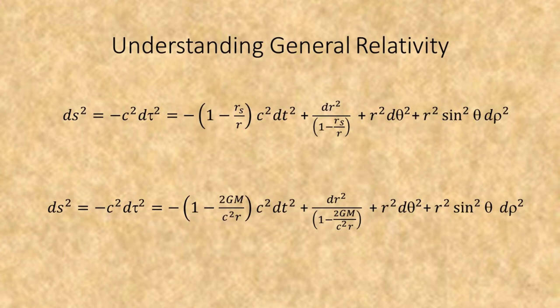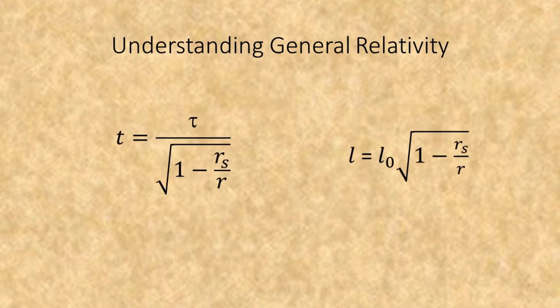This metric reduces to the following equations, where ds is the distance in space-time, dtau is the proper time, dt is the time of an outside observer, and r is the radius from the center of gravitational attraction. This results in these two relationships between observed time and proper time, and observed length and proper length.